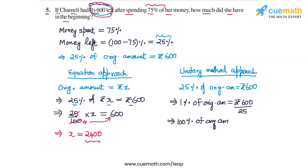What will the 100% of original amount be? It will be Rs. 600 by 25 into 100. This will be 100% of the original amount. 100 by 25 is 4 and 600 into 4 is 2400 once again.